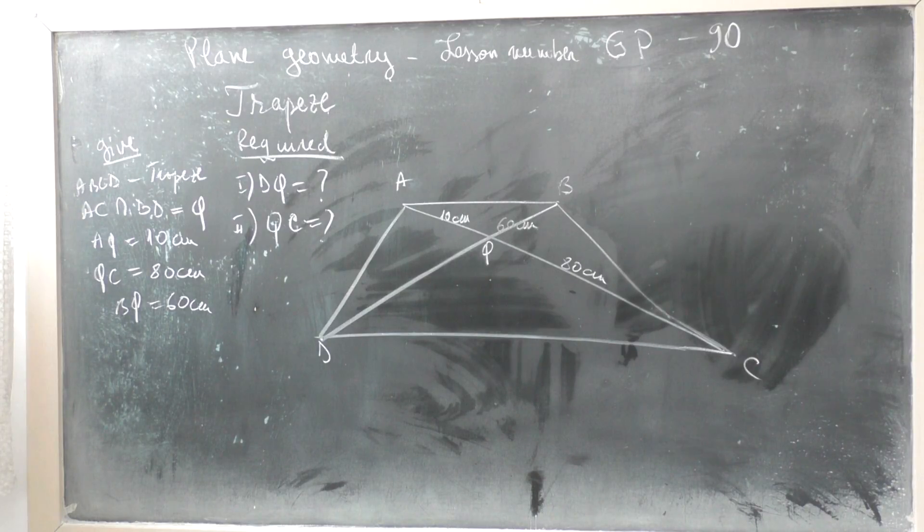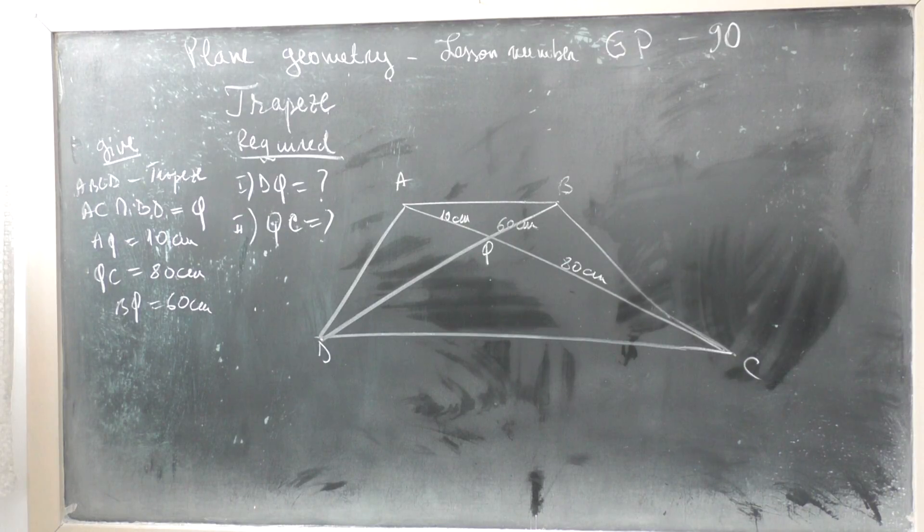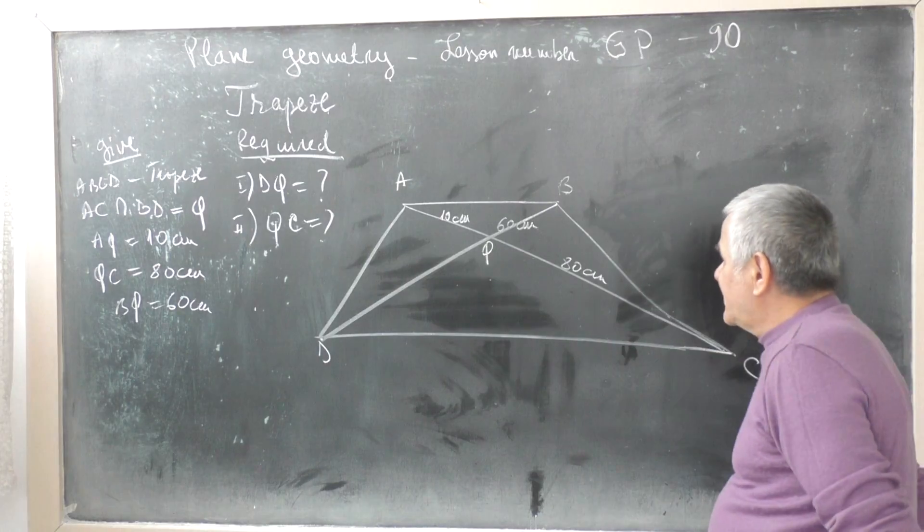Trapeze ABCD where diagonal AC intersects diagonal BD. Q equals BD intersect AC. AQ equals 10 cm, QC equals 80 cm, BQ equals 60 cm.